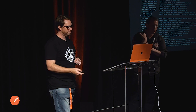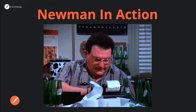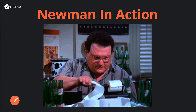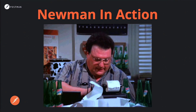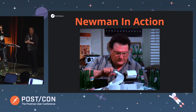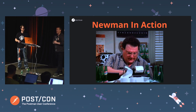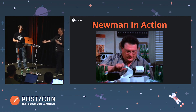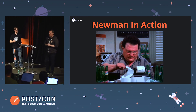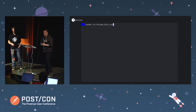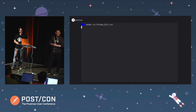Newman got its name from a character in Seinfeld - Newman was the postman in Seinfeld, so Newman is the companion to a Postman. I don't watch Seinfeld so I didn't really know - I just got told and now I'm telling you. And we don't do Seinfeld in England, which explains a lot about the state of our politics.